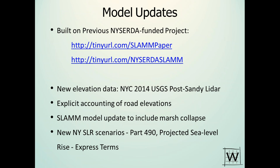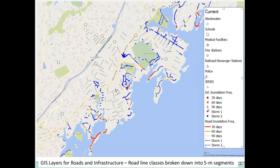In terms of SLAM results updates, we've brought in a new elevation data layer, we're explicitly accounting for road elevations, and we've added a model update to include marsh collapse. When marshes change types, there is often a collapse in the soil structure. We're using data from David Burdick and UNH to characterize how much of that may be happening — that's part of the uncertainty analysis as well. The latest New York State sea level rise scenarios are also being utilized.